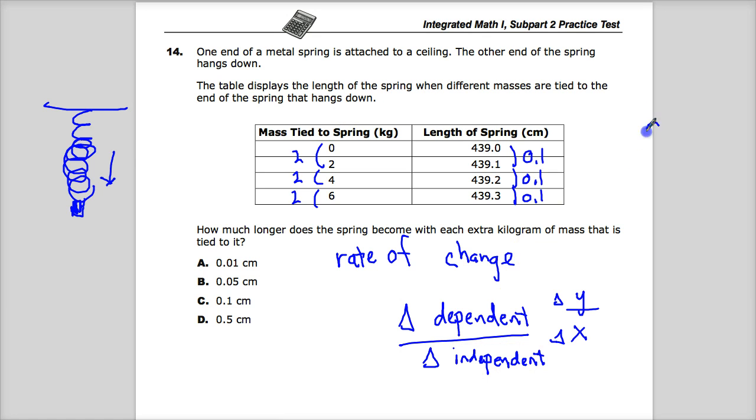Anyway, the change in dependent is 0.1. And the change in each independent variable is 2. So, 0.1 divided by 2, and this is a calculator section, so you don't even really have to think that it's something other than 0.05. Because it is, and that would be centimeters.